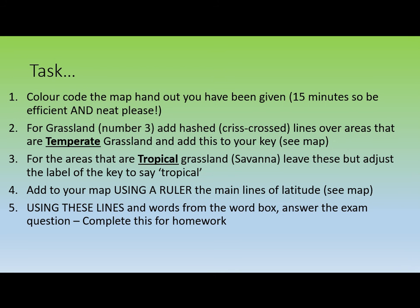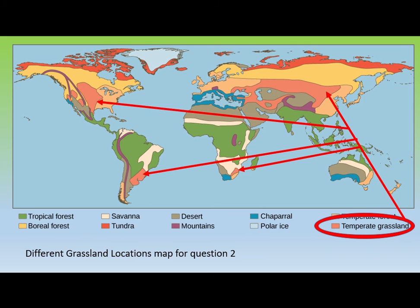Once you've done the colouring, the next task is to distinguish between temperate grassland and tropical grassland on your map. Temperate grasslands appear in a couple of patches in North America, a large swathe across Asia, a small patch in northern Southern Africa, and another in southeastern South America — mark these with cross-hatching. The savannah areas can remain as normal grassland; you can see they are generally adjacent to each other except in the northern hemisphere.